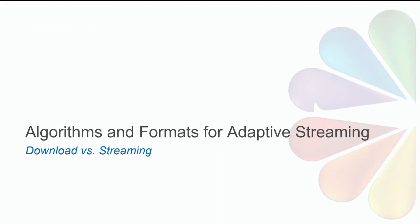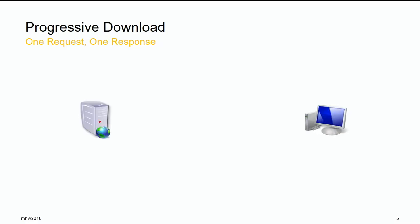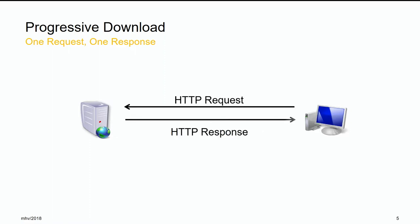First, a couple of definitions — download versus streaming. The first method, besides using a torrent or peer-to-peer network or just an HTTP download, the biggest improvement over the download-and-play process was progressive download. Here, you have an HTTP server and an HTTP client like a browser. You send a request for content and get a single response which has the entire content — audio, video, all multiplexed in a single file.